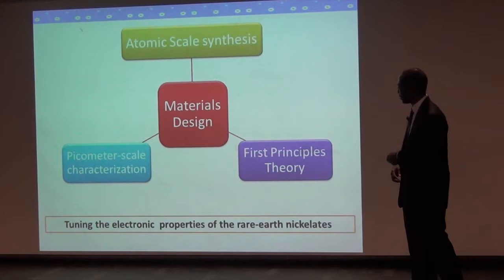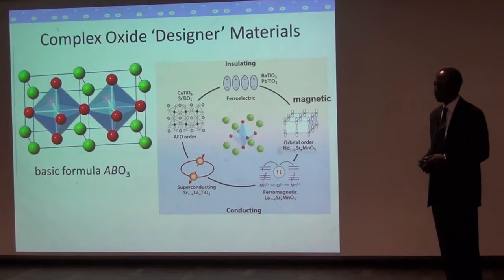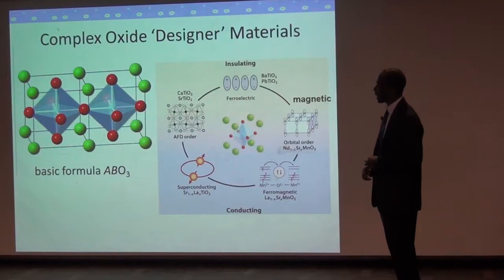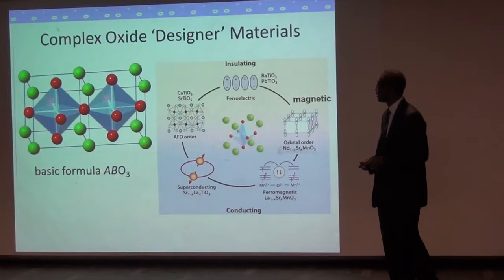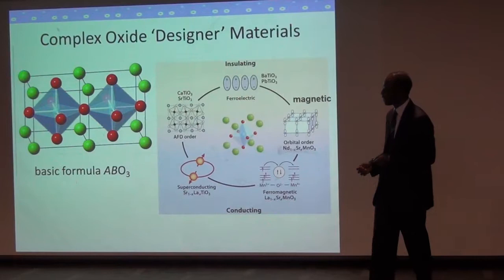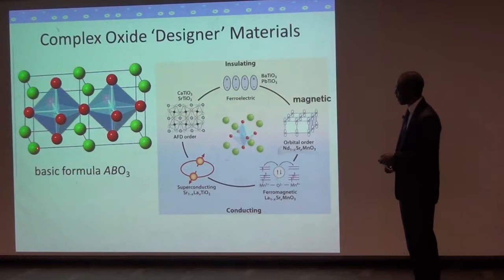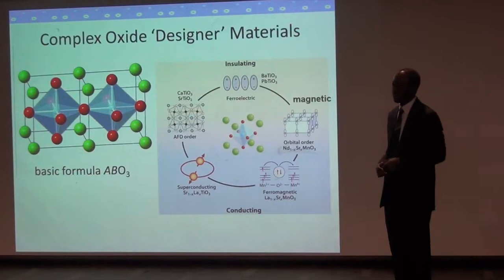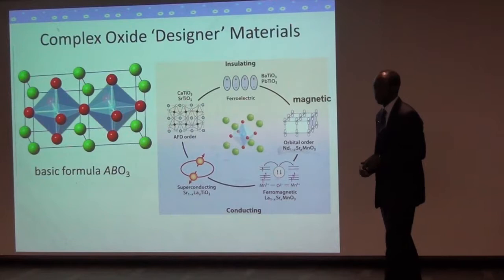The example I'm going to show you today is how we can tune the transport properties of a class of materials known as the rare earth nickelates. The one I'm particularly interested in is a class of materials known as complex oxide materials. These materials are complex because they contain two or more metals in the crystal structure, and they contain oxygen. They generally have a basic crystal structure where one of the metals, usually a transition metal ion, occupies the center of a cube surrounded by an octahedra of oxygen atoms, and the other metal ions occupy the cube edges.